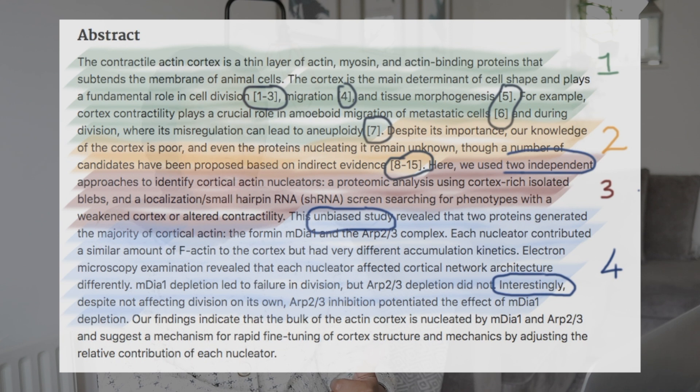Use emotive words — 'interestingly, despite not affecting division' is a good example. Words like 'surprisingly' or 'unexpectedly' show that what you found is not just what everyone expected, but that it was genuinely interesting. It adds character and personality to your abstract.